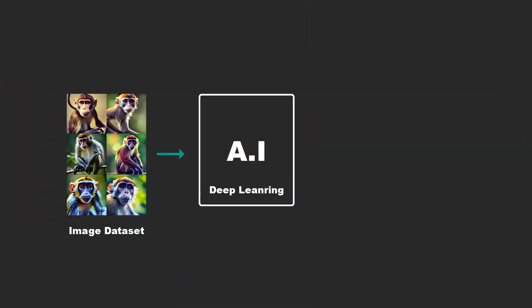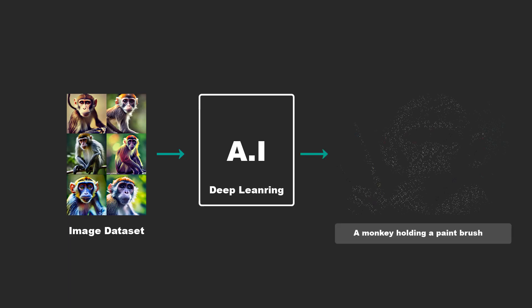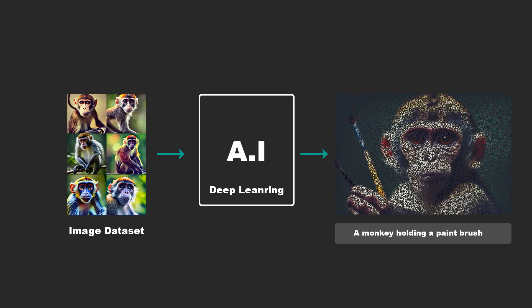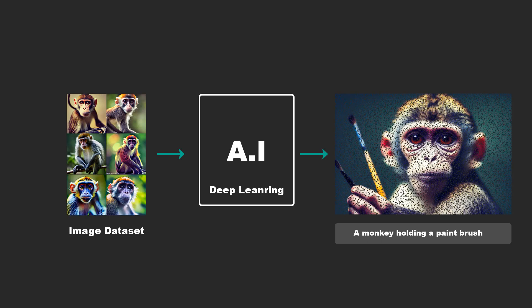So how does this all work? How does an algorithm know what a monkey holding a paintbrush is? Contrary to popular belief, the images aren't being copied and pasted from elsewhere to make an image. The algorithm knows what a monkey looks like and what a paintbrush looks like, and the reason why it knows is because it's been trained to know. The AI uses something called image datasets, which essentially is a library of images. The AI would have been trained on millions of images of monkeys, so it learned what a monkey would look like. When it generates the image, it's absolutely a brand new image — not an amalgamation of other images. It's mathematically formulated, each of the pixels in the diffusion, to create a new image.